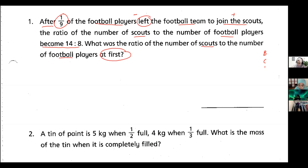This is a BCA (Before-Change-After) problem. The word 'left' tells me this is my change information. One unit left, so my nine units is the football players' before value. They left the football team and joined the scouts, so the change is between each other — this is the total unchanged concept.